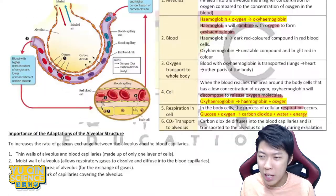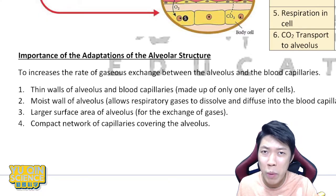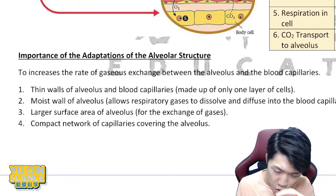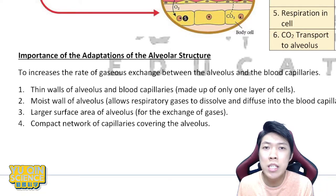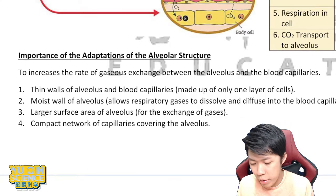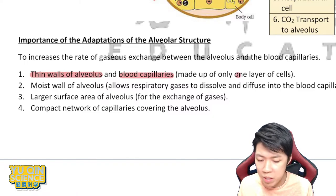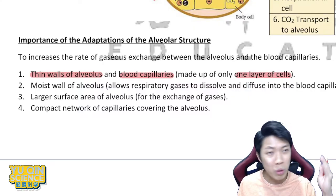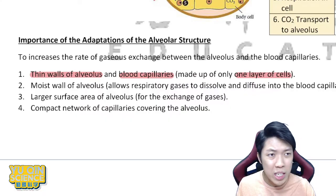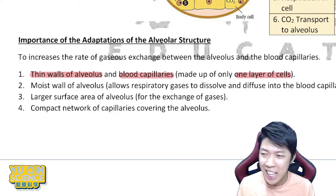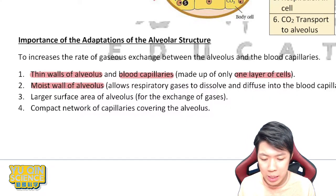What are the special adaptations of the alveolus — why is it so good? There are four characteristics that make the whole process of diffusion easy and efficient. Factor one: the wall of the alveolus is very thin, and the blood capillary is also very thin — just one layer of cells — so it makes diffusion happen very easily and gases exchange more efficiently.